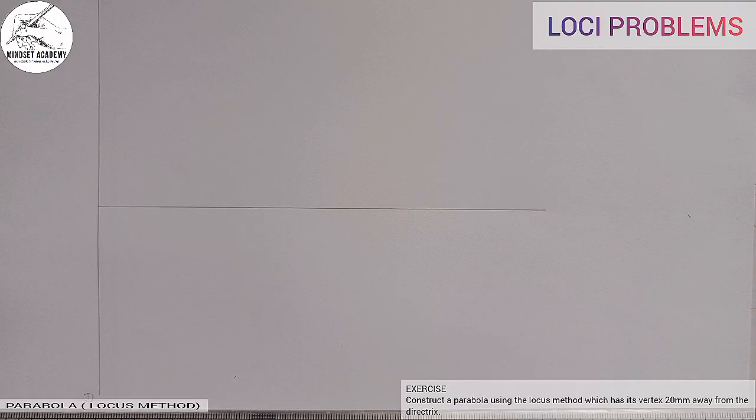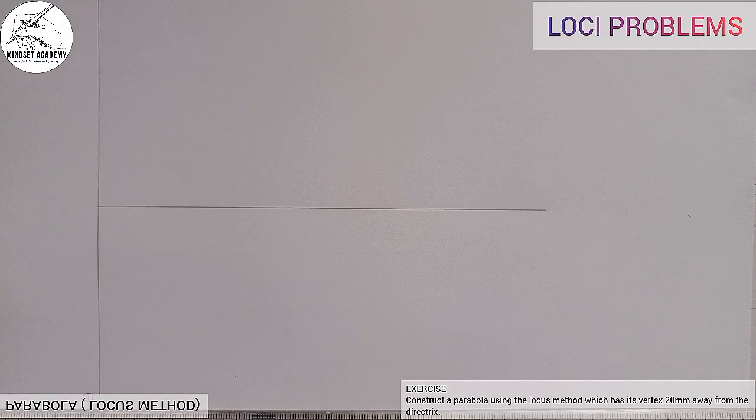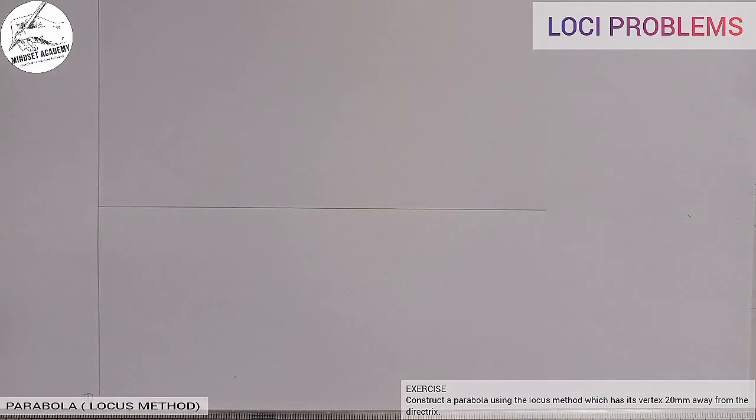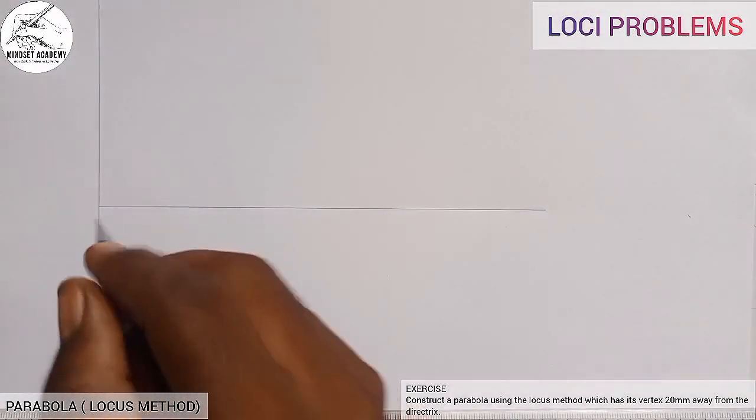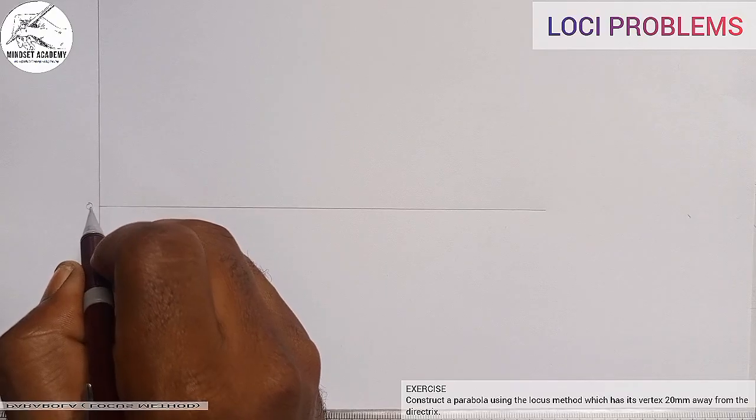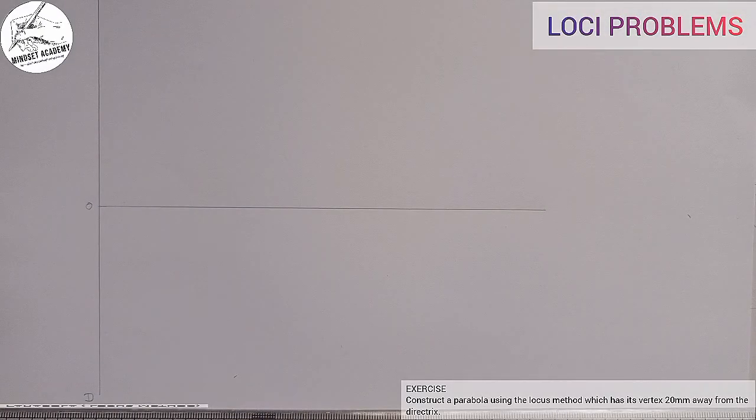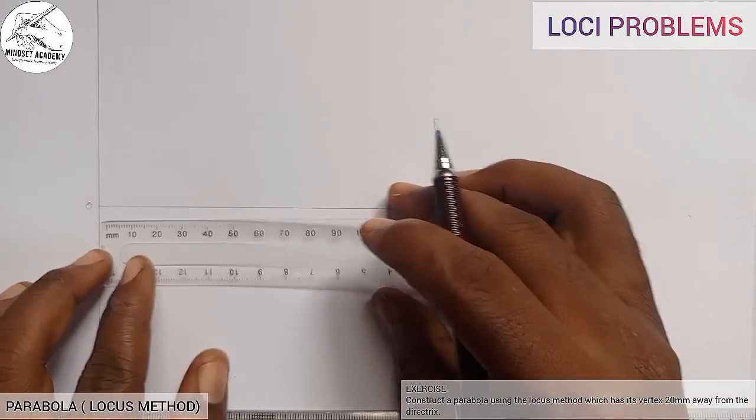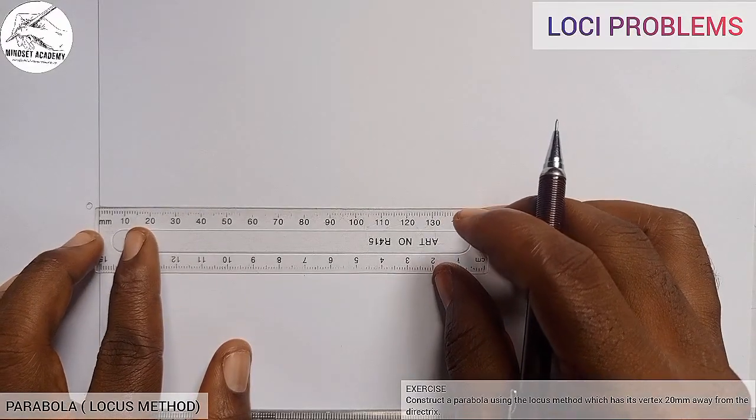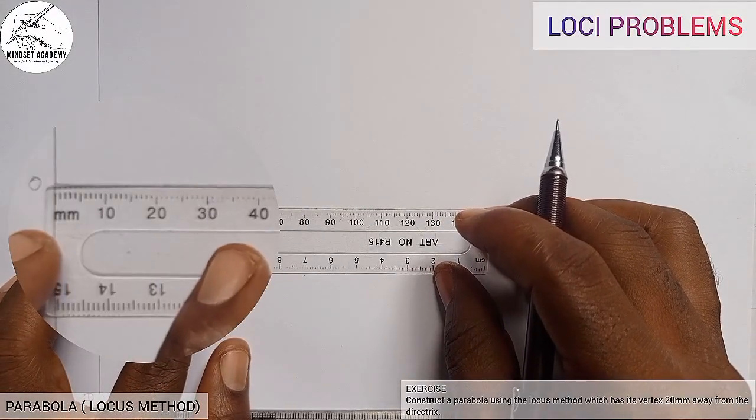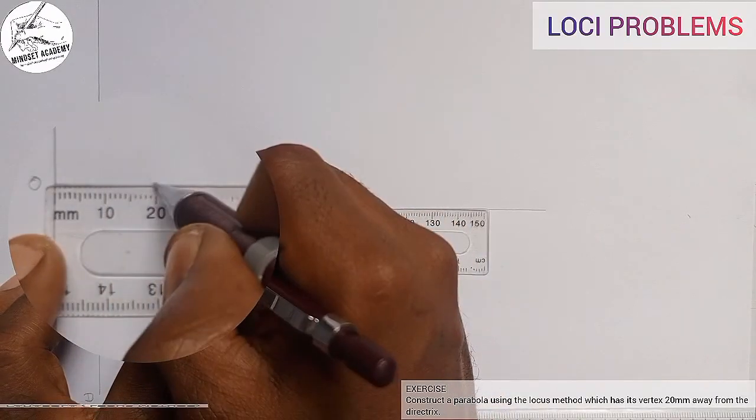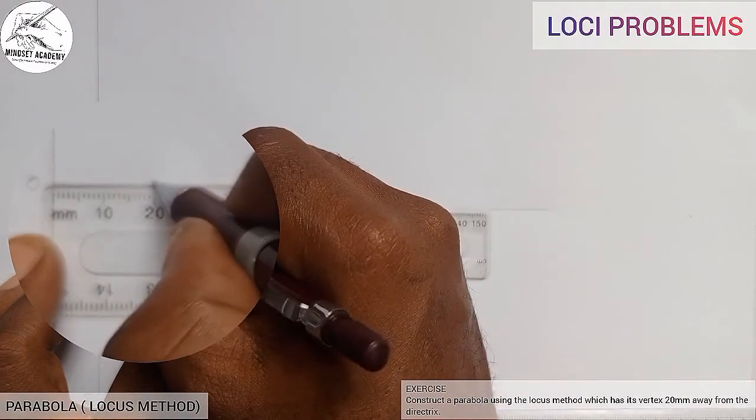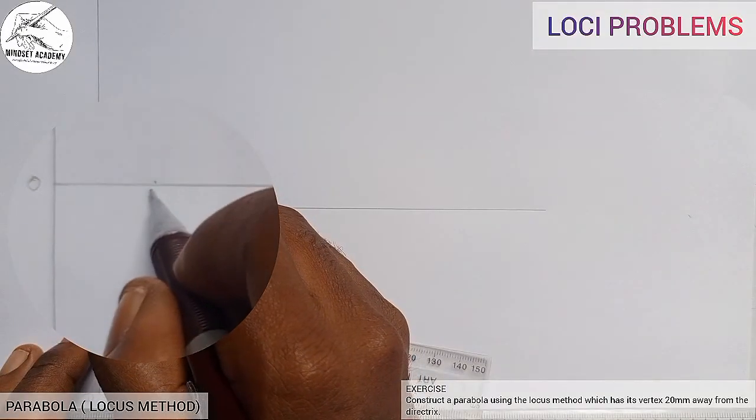Now we are told that the vertex is 20 millimeters away from the directrix. So this is the directrix and let me call here to be my point zero. From this point, point zero, I will measure 20 millimeters. From this point here to this point is 20 millimeters. That will be my vertex.